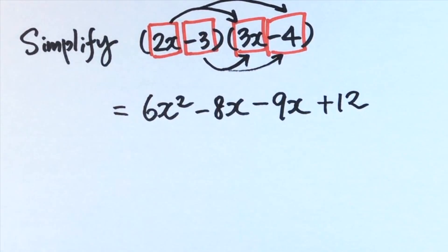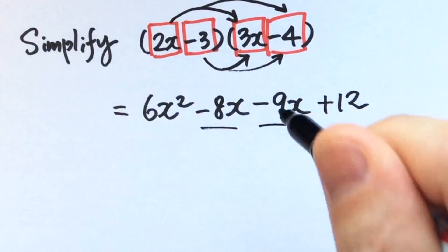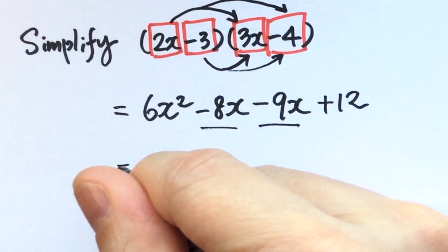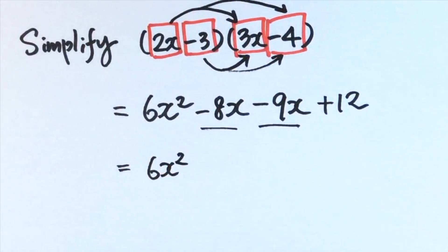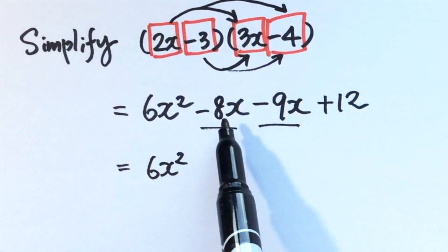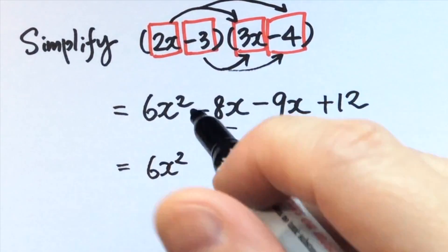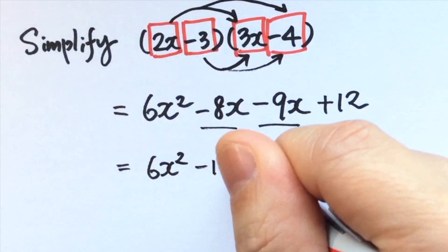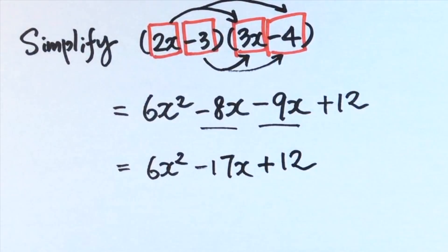We have two like terms that can be further simplified: negative 8x and negative 9x combine to give negative 17x. So the final answer is 6x squared minus 17x plus 12.